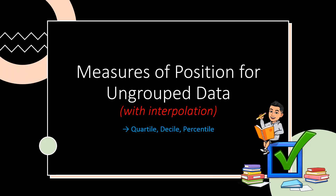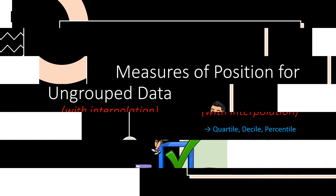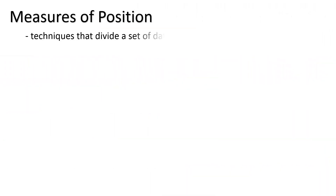Measures of position for ungrouped data. What is measures of position? Measures of position is a technique or techniques that divide the set of data into equal groups.